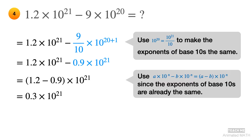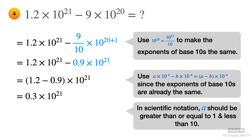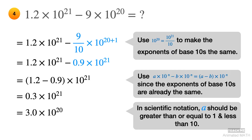The result of the subtraction is 0.3 times 10 to the 21st power. But is this already in scientific notation? The scientific notation follows the form a times 10 to the nth power, and a should be between 1 and 10. So subtract 1 from the exponent of 10, leaving you with 10 to the 20th power. You now have to multiply 0.3 by 10 because you subtracted 1 from the exponent. The final answer is 3 times 10 to the 20th power.